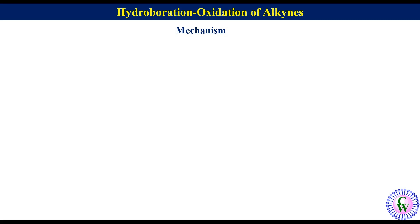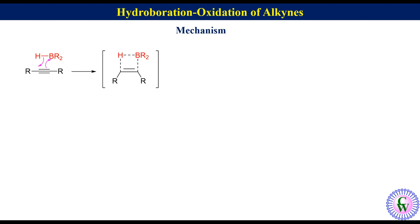Mechanism: The alkyne is electron rich due to the presence of a pi bond, while the hydroborating agent is electron deficient because boron has an incomplete octet. Transfer of pi electrons to boron and simultaneous transfer of hydride ion to the alkyne carbon leads to the formation of a four-membered cyclic transition state, which then collapses to alkenyl borane.